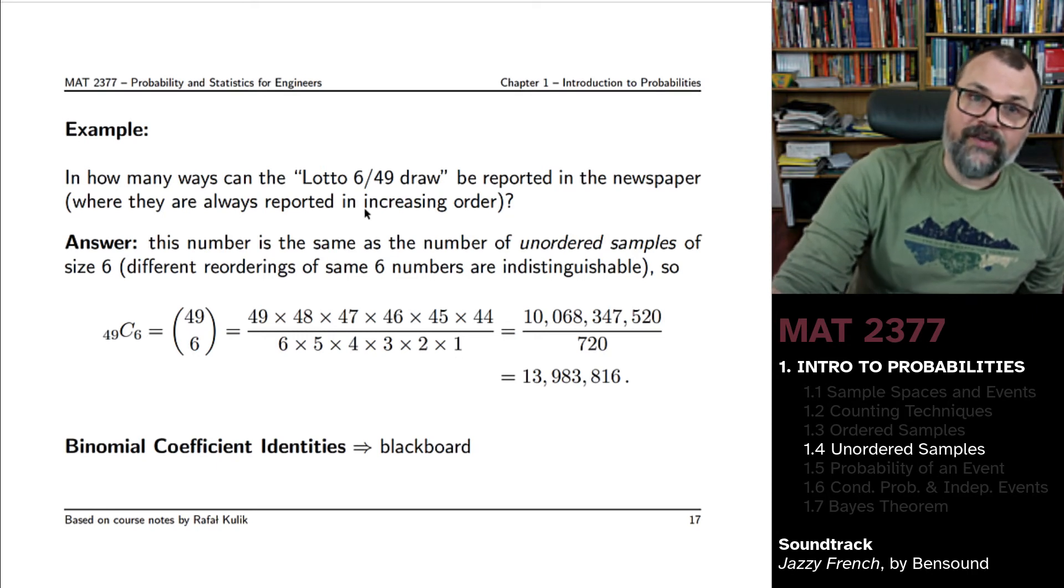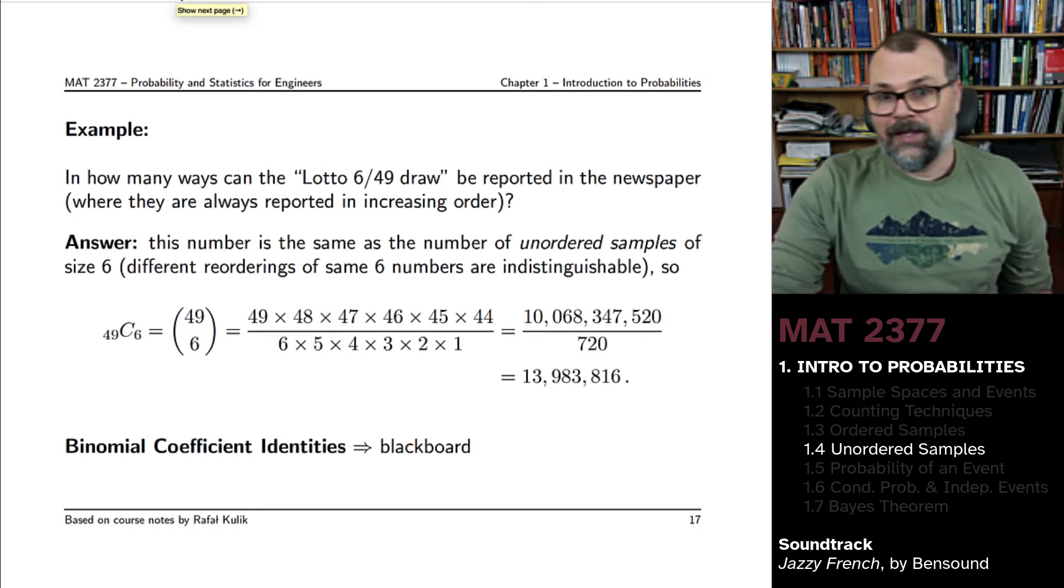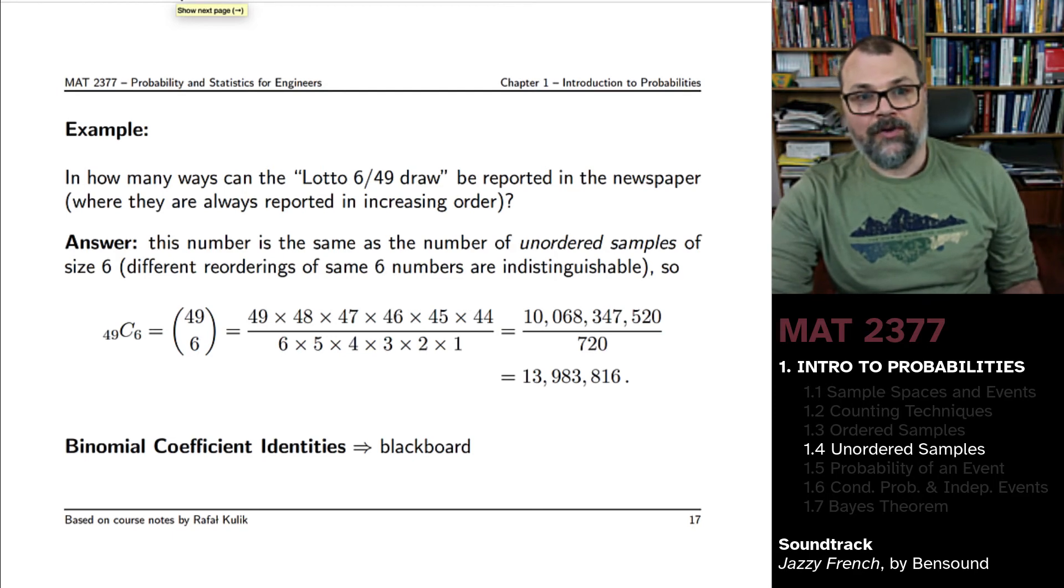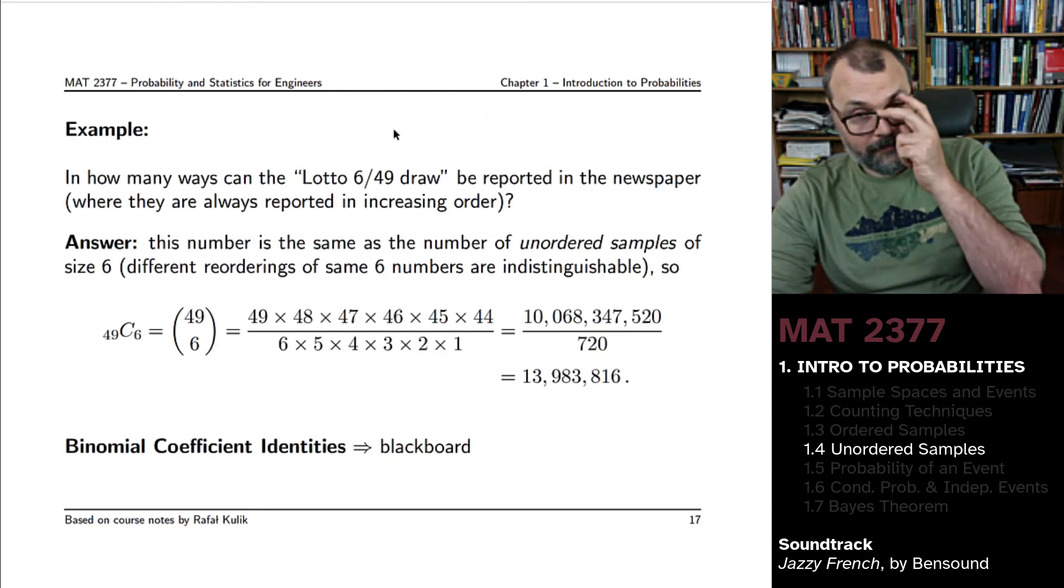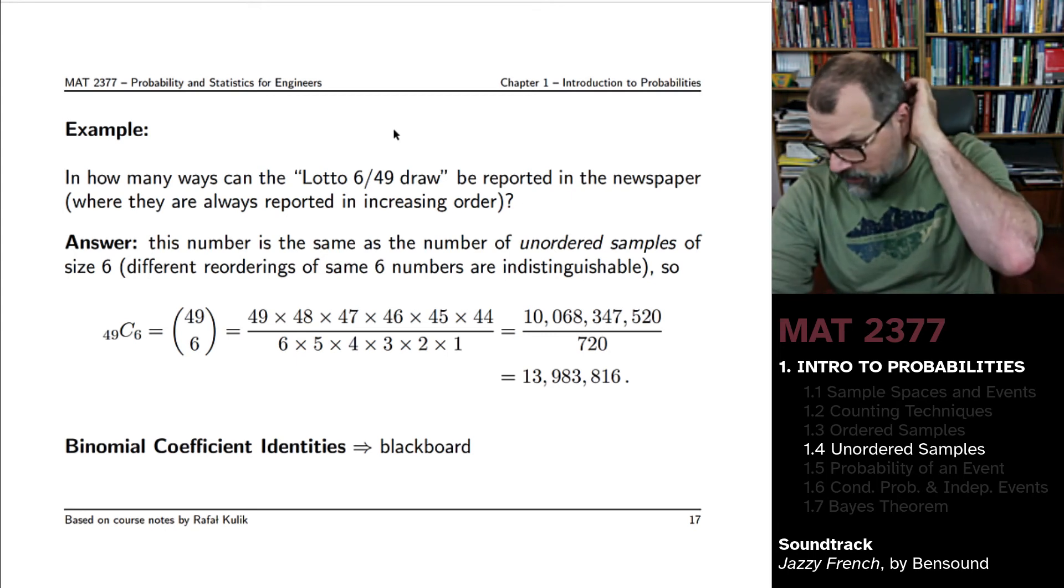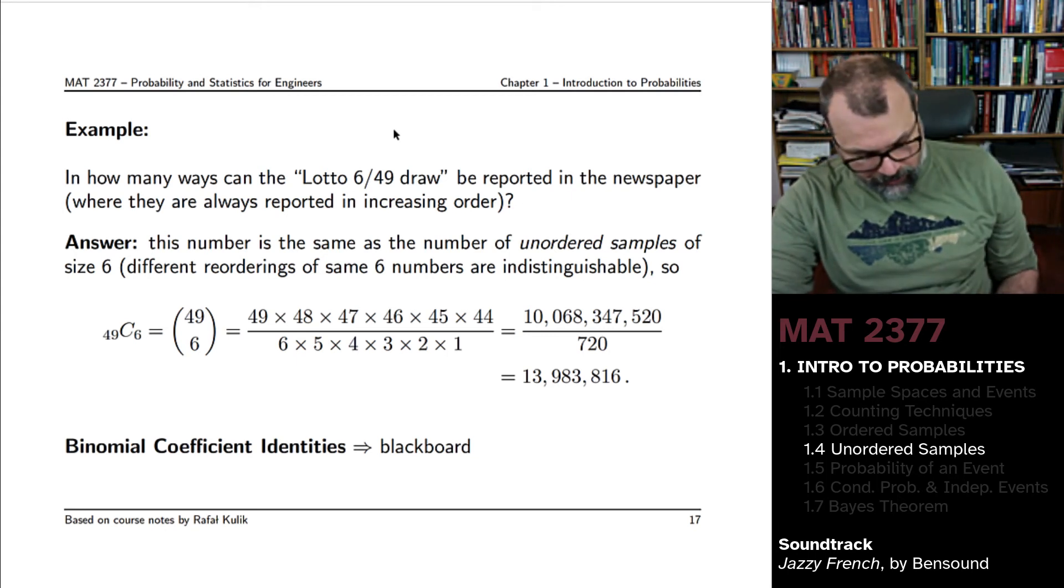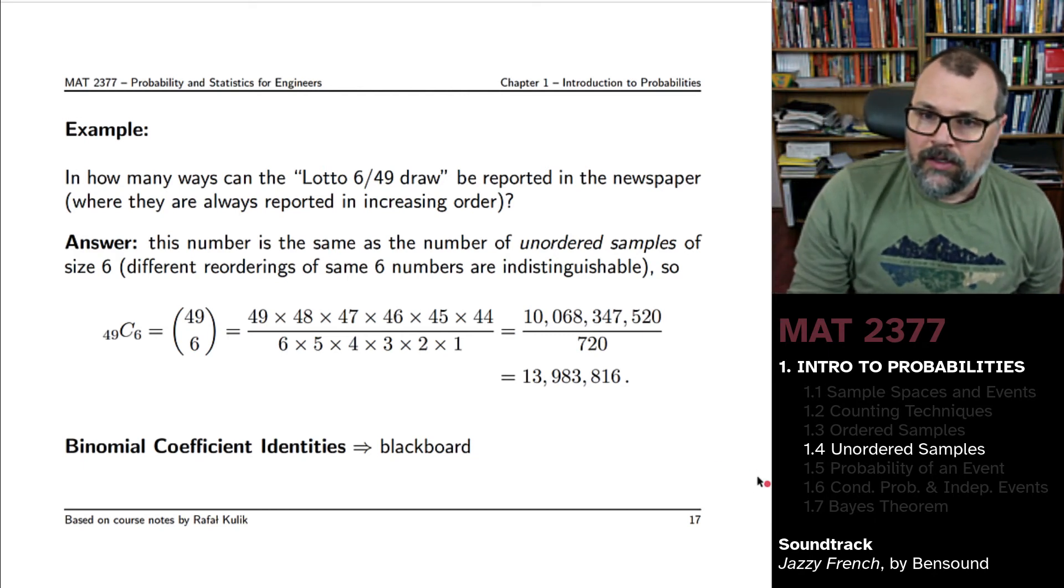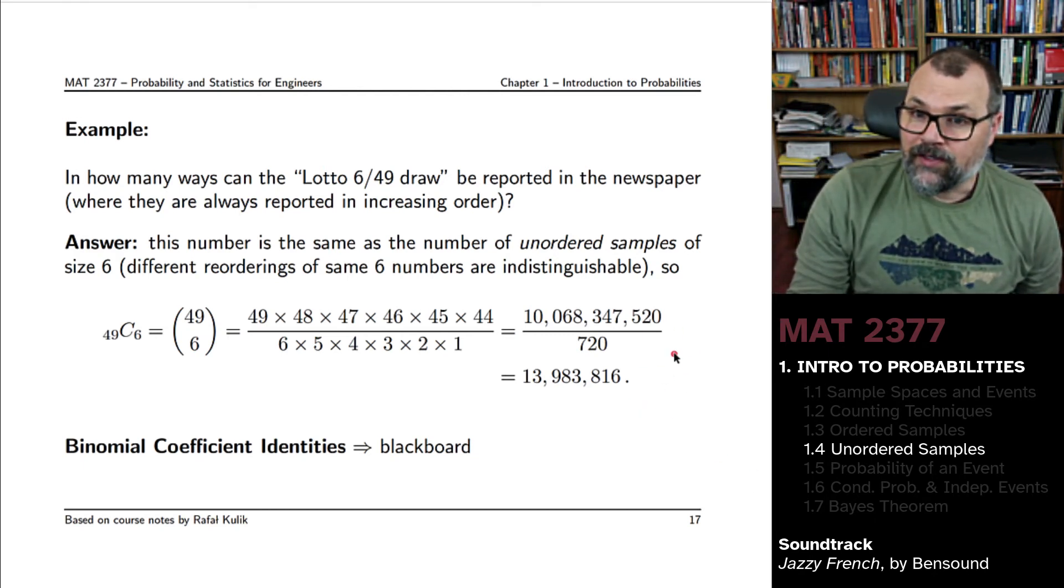There are various identities that exist to allow you to find the values of these binomial coefficients. One of the very easiest ways for you to compute these things is through something called Pascal's triangle.